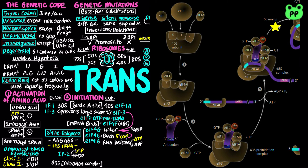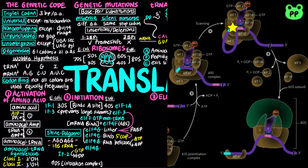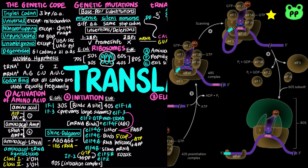EIF4A helicase and EIF4B scan the bound mRNA starting at the 5' cap until an AUG codon within the Kozak sequence (the conserved bases around the initiation codon) is encountered. EIF5 promotes GTPase activity in EIF2. EIF5B also hydrolyzes bound GTP, triggering EIF1, 1A, 2, 3, and 5B to leave. The 60S subunit associates, forming the 80S initiation complex.